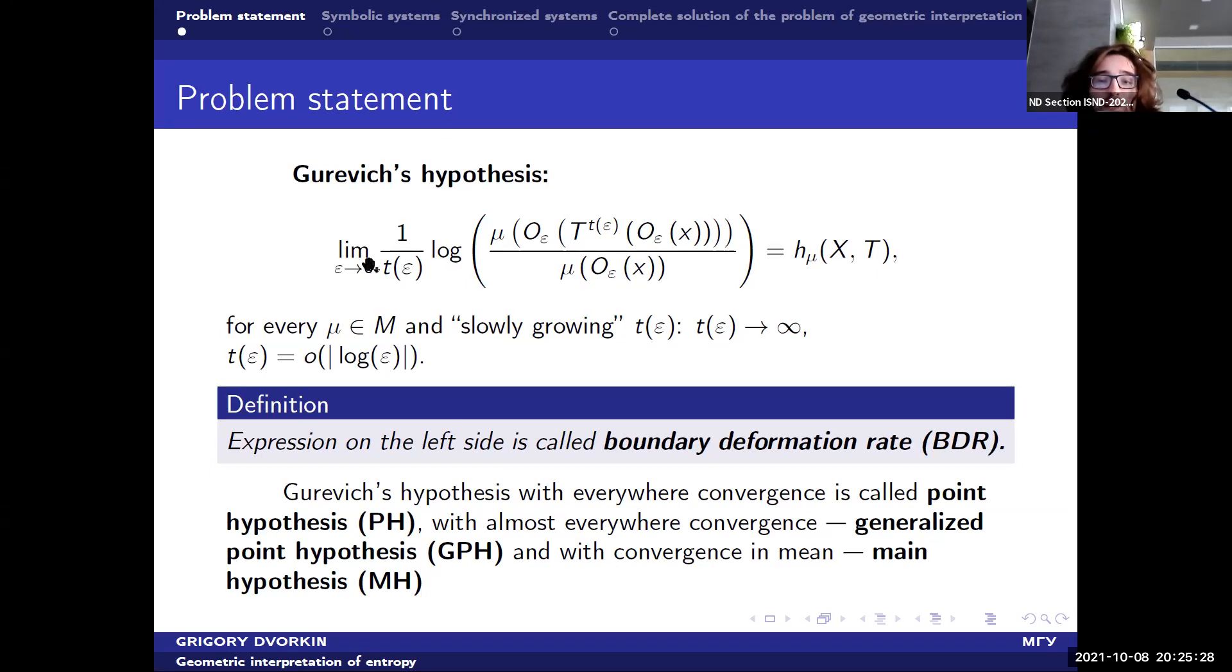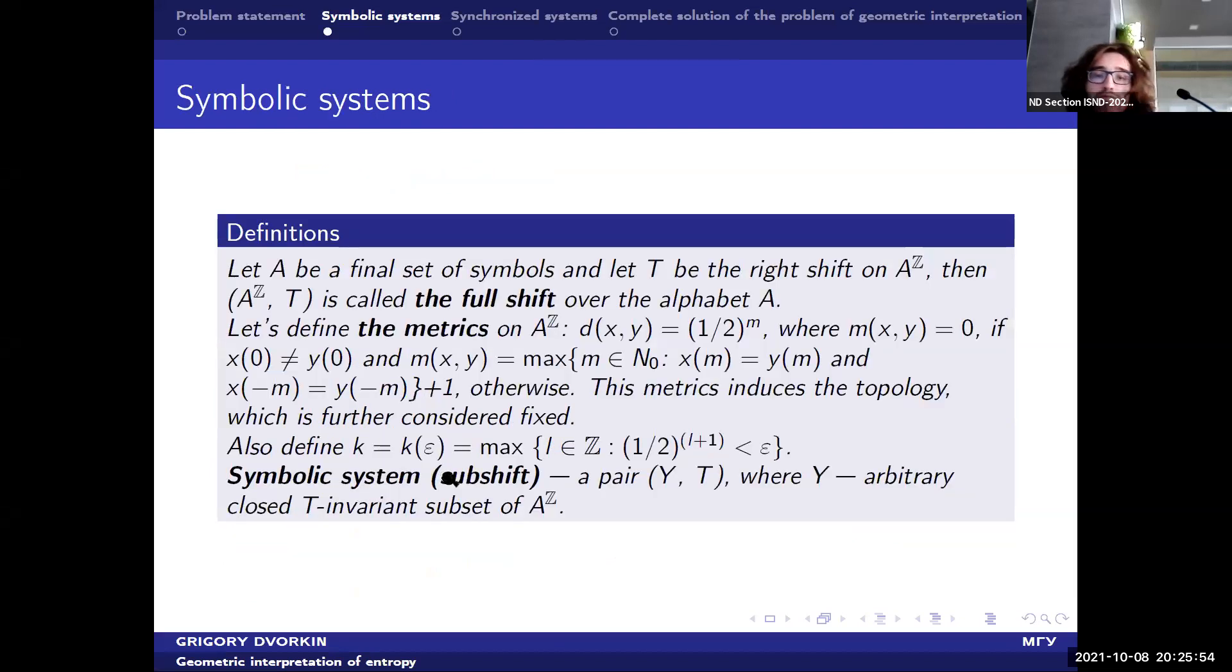And the expression on the left side, that is on the left side, we call boundary deformation rate, BDR. This thing is about the types of limits that I have already mentioned. Now I'm working with symbolic systems. What is symbolic systems?